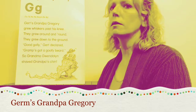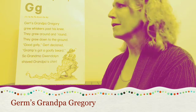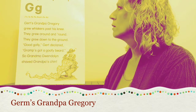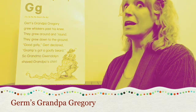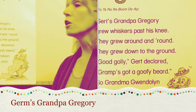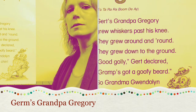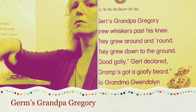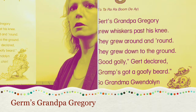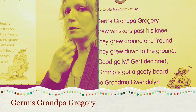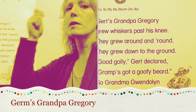We have the G song — uppercase G, lowercase G. This is a song I don't know, but I know the tune because I've sung it before. It is to the tune of Ta-Ra-Ra-Boom-D-A. And it goes like this: Gert's Grandpa Gregory grew whiskers past his knees. They grew around and round. They grew down to the ground. Good golly, Gert declared, Grandpa's got a goofy beard. So Grandma Gwendolyn shaved Grandpa's chin.